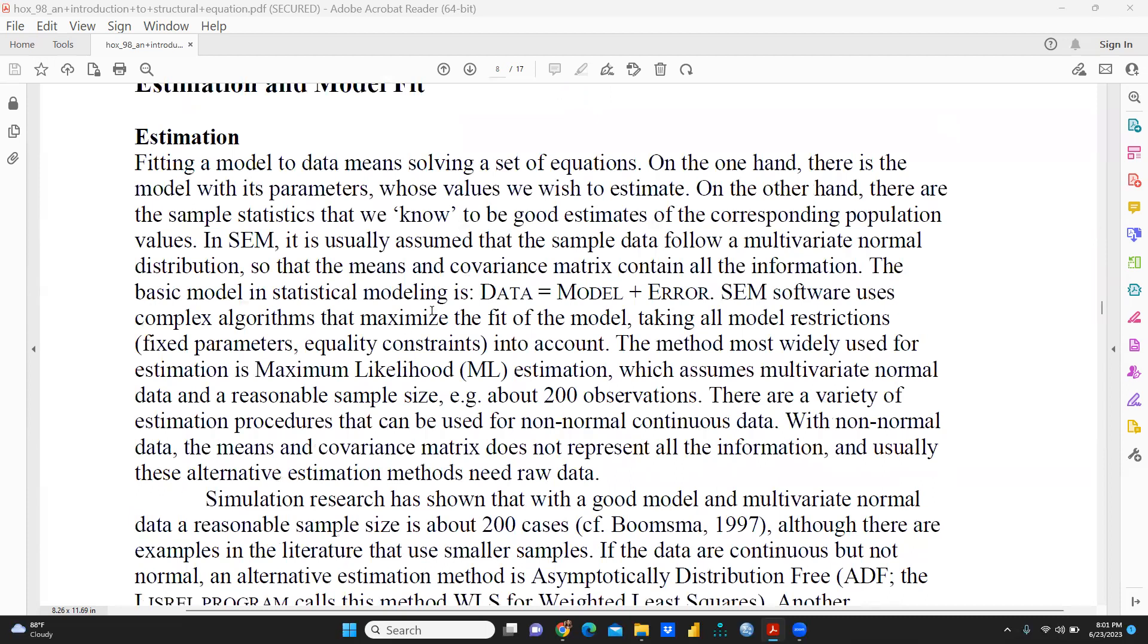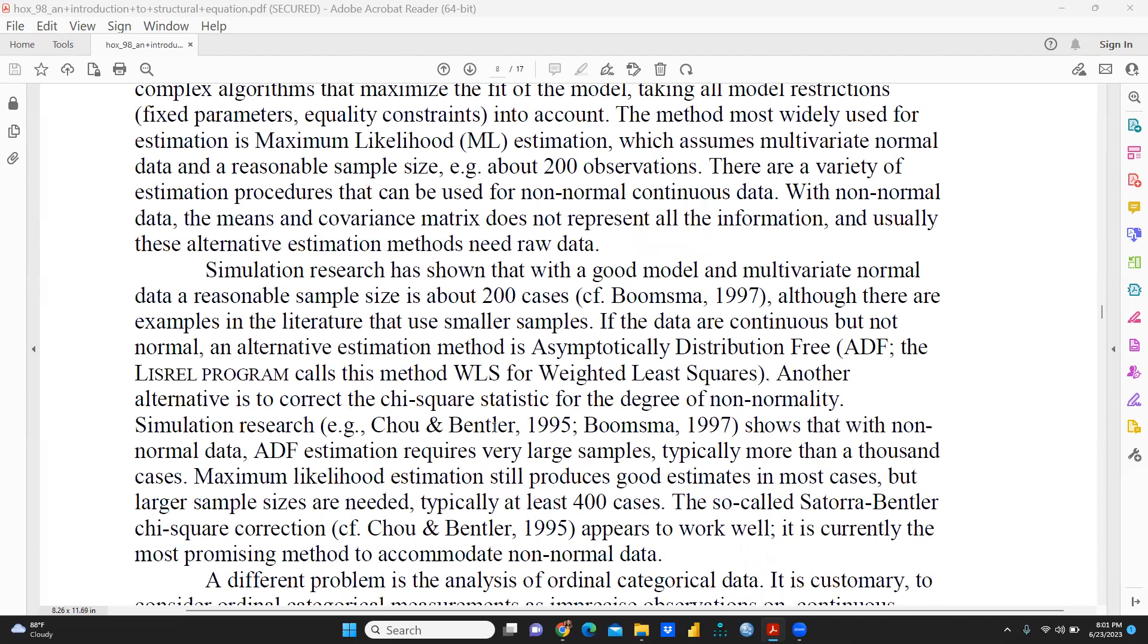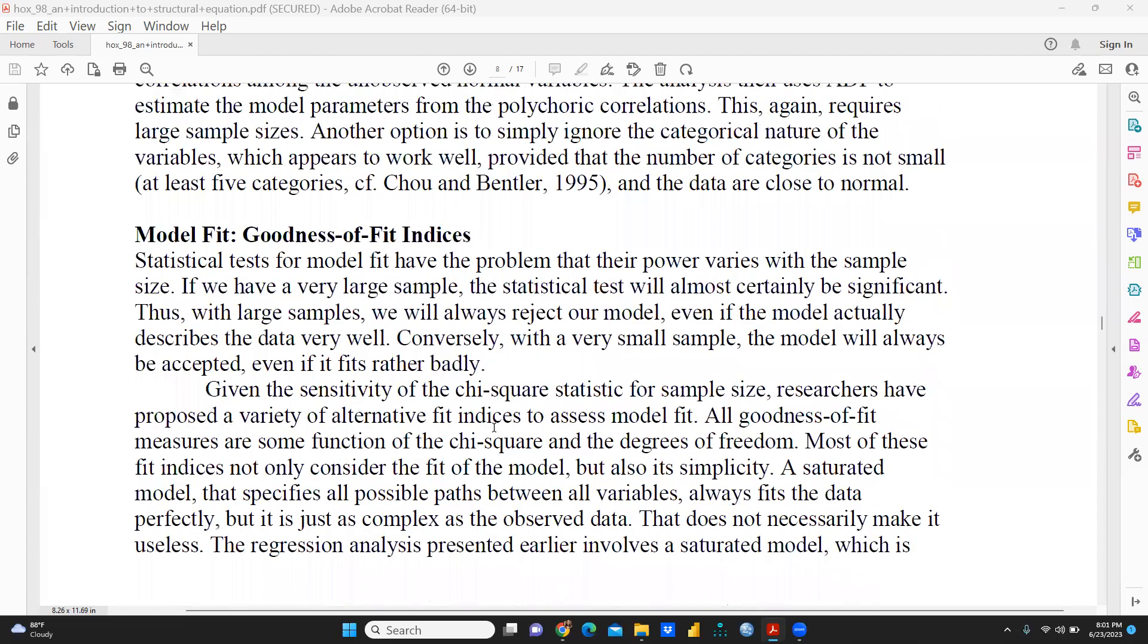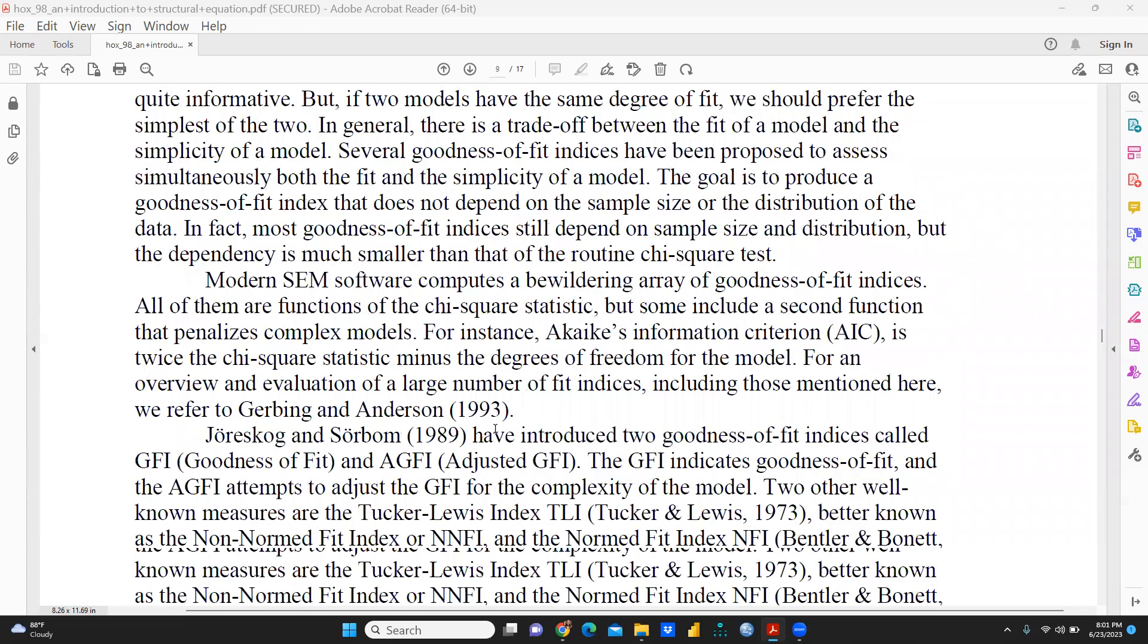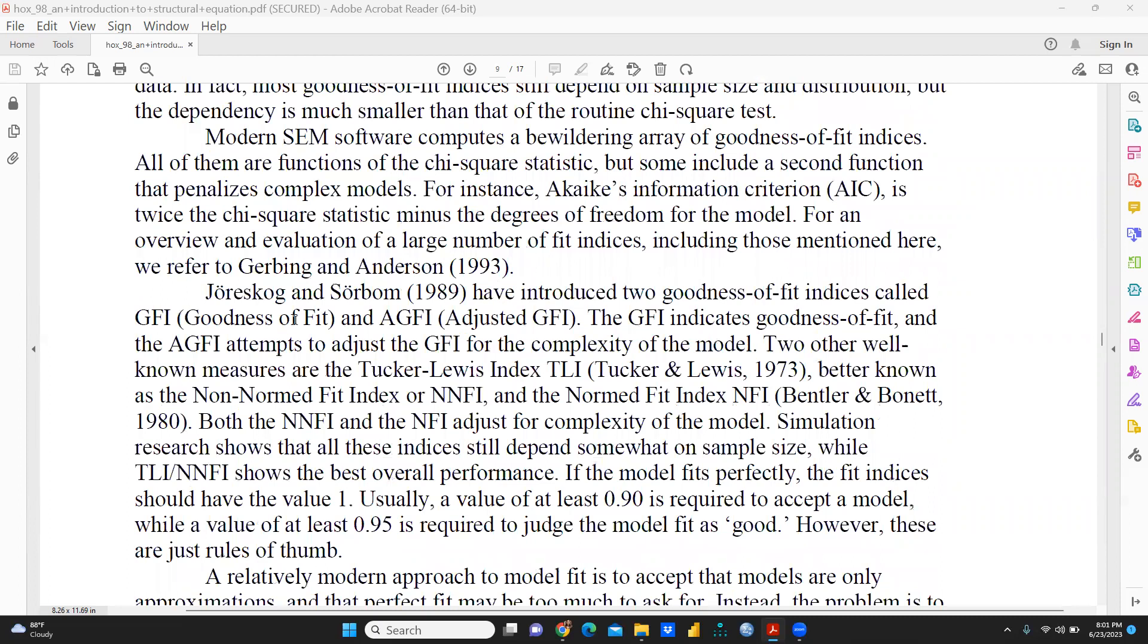How we can get these estimates—this estimation works on maximum likelihood, and in that way it has been defined here. You can see, and further, model fit goodness of fit indices. Finally, these are what you mean by GFI. AGFI means goodness of fit indexes, and AGFI is adjusted GFI. GFI indicates goodness of fit, and the AGFI attempts to adjust the GFI for the complexity of the model. Two other well-known measures are the Tucker-Lewis index (TLI), better known as the non-normed fit index (NNFI), and the normed fit index (NFI).